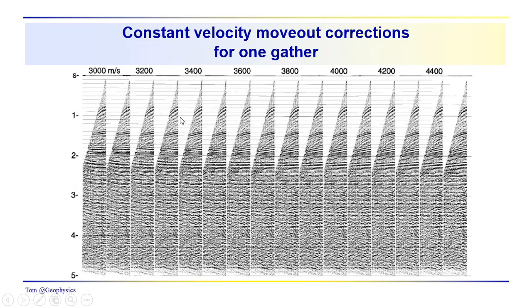So there are different things that interpreters do. There are different kinds of data sets that they work with. Here's a data set which consists of constant velocity move out corrections for a single gather. So this is the same gather repeated over and over and over and over again. But it's been corrected with 3,000 meter per second correction velocity, 3,200 meter per second, all the way out to 4,400 meters per second. And then you can see what the effect of these different correction velocities has had on these reflection hyperbole that we see in here. Have they flattened them out?